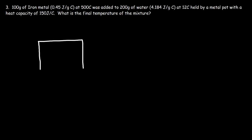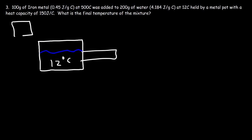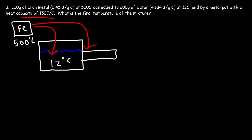Let's draw a picture. This is the metal pot, with water already inside it. Both the water and the metal pot are at 12 degrees Celsius. Then we take a chunk of iron metal at 500 degrees Celsius and add it inside the water. So heat is going to flow in two locations: to the water, and some of the heat energy is going to flow towards the metal pot. We're given the heat capacity of this metal pot, so we have to take that into account.